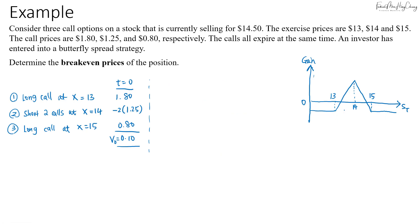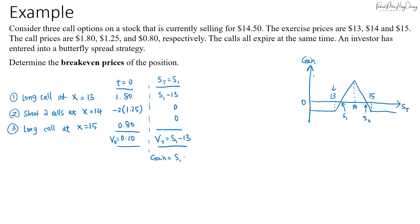For the butterfly spread strategy, there are two break-even prices. The first break-even price is slightly above the first long call strike. At the first break-even price S₁, only the long call at $13 is in the money. The value at expiration is S₁ − $13. Setting the gain equal to zero: S₁ − $13 − $0.10 = 0, so S₁ = $13.10.